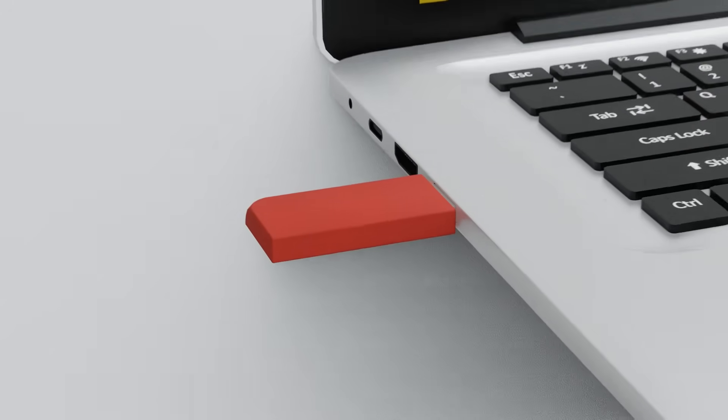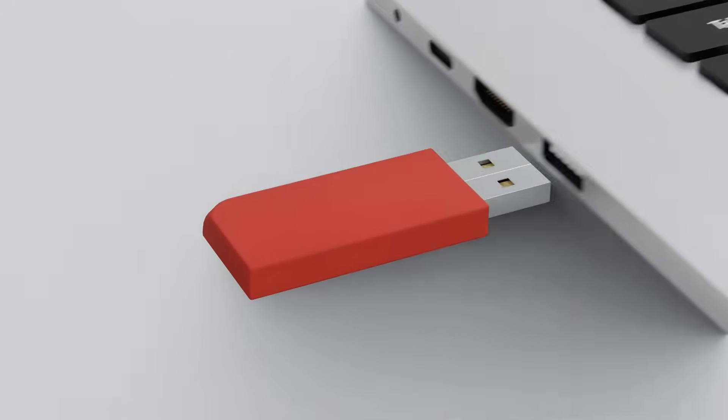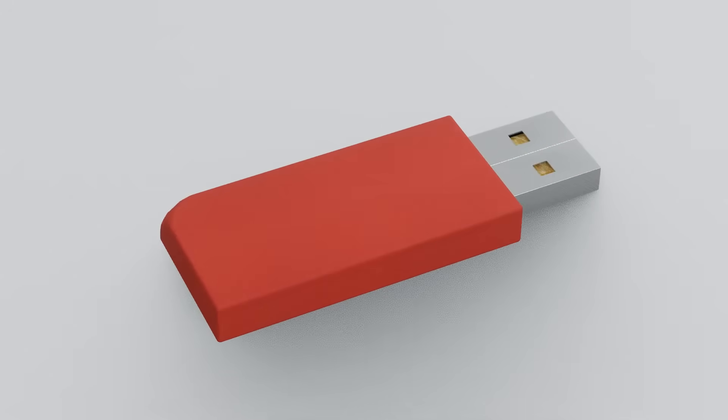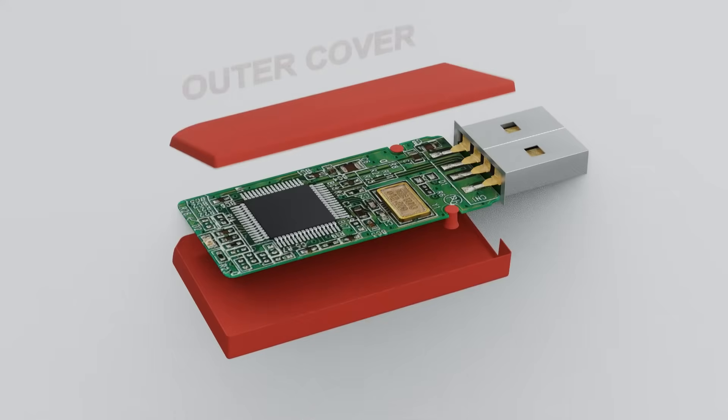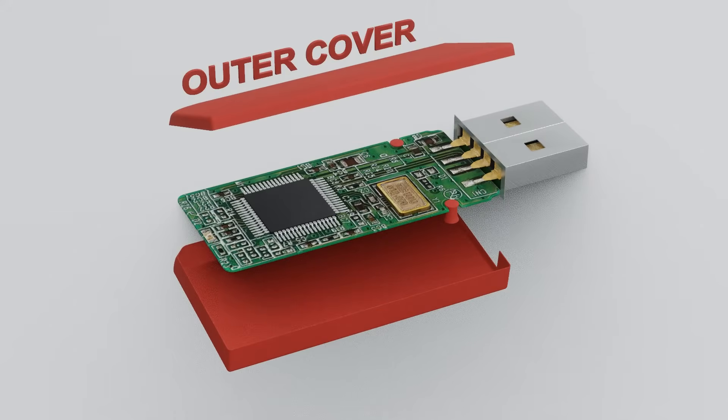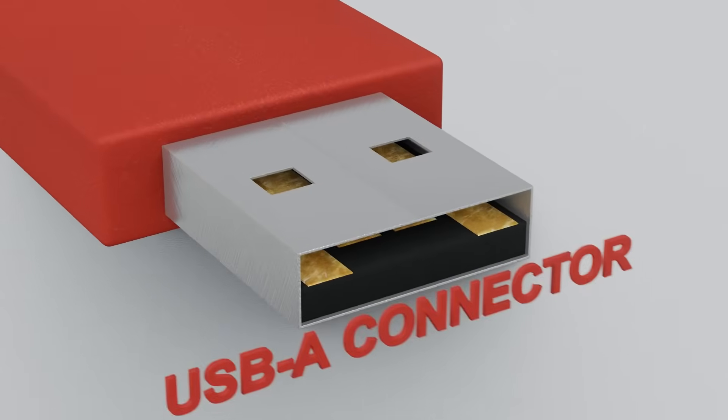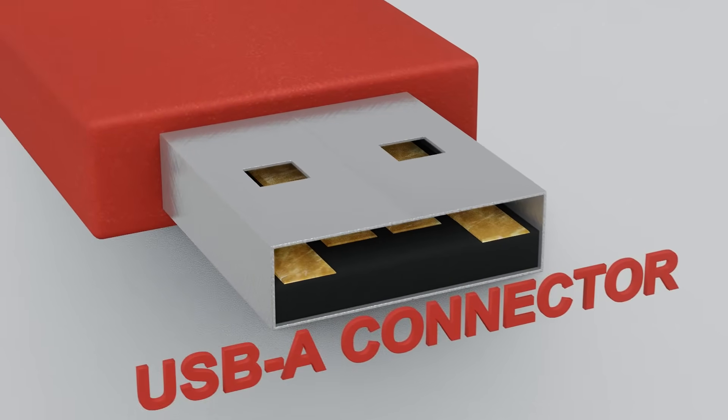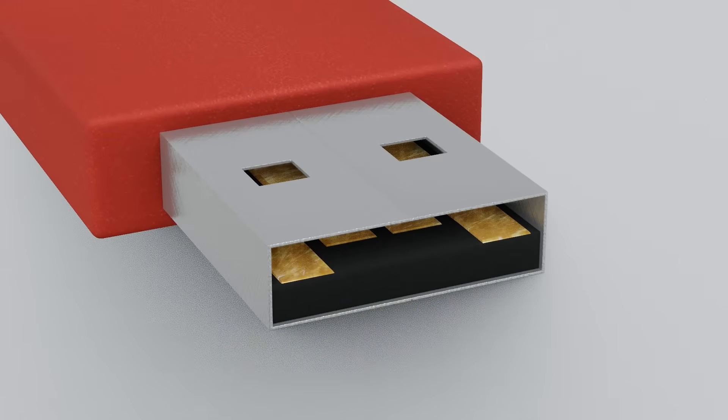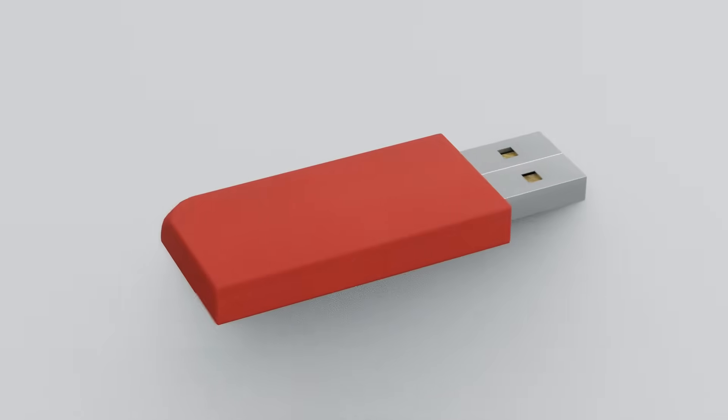If we head over to the drive, every USB has five key components that are essential for its functioning. The outer cover which protects the internal circuitry and prevents it from getting any damage. Connector plug, the front part of the USB stick that plugs into the device. This USB drive has a USB-A connector.